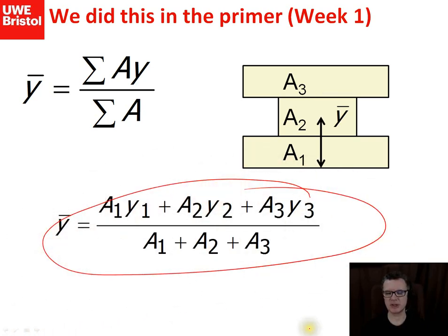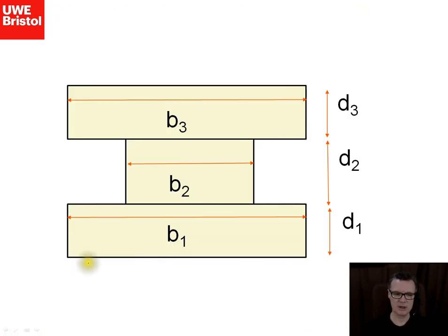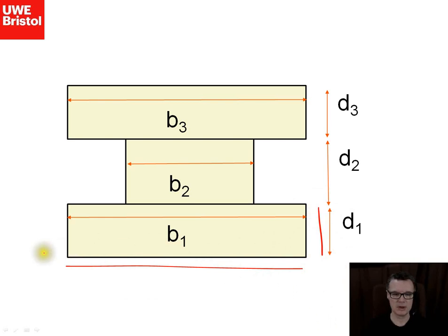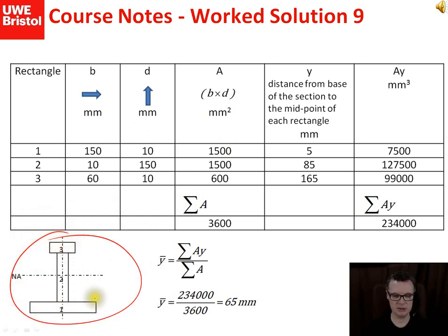You could just use that formula directly for an I-type beam, but what we want to do is use a more tabulated way of writing out our numbers, because this helps when going on to find the second moment of area for the cross section. We'll call the dimensions breadth and depth - I avoid 'height' because I'll use h for another term later. Breadth times depth gives the area of the rectangle section, and we'll fill up a table.